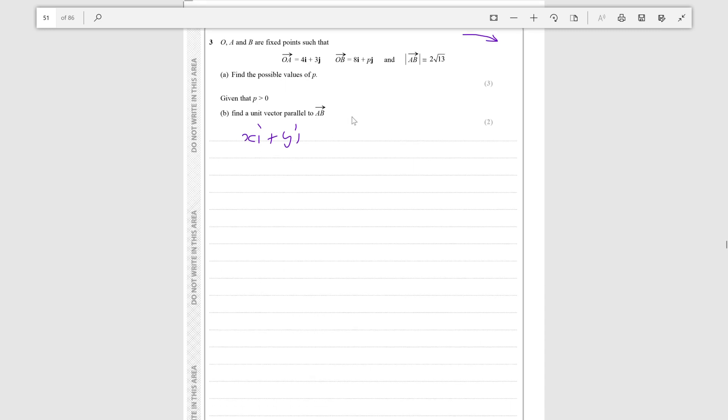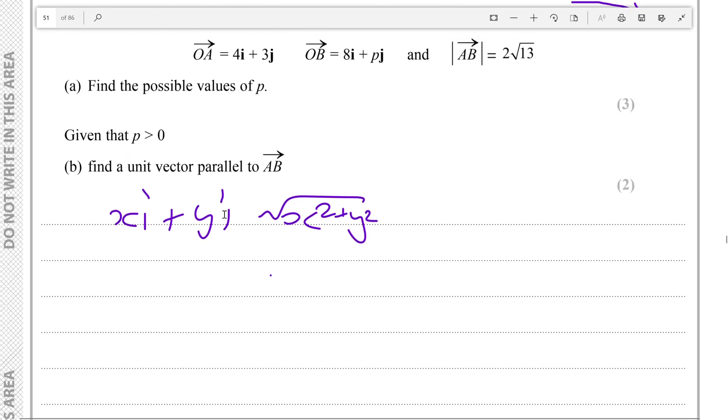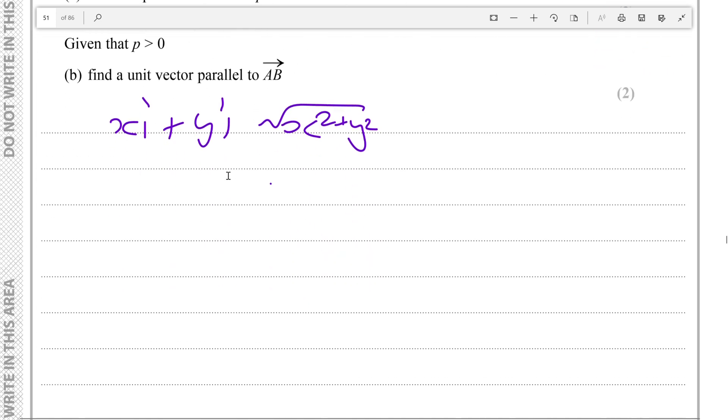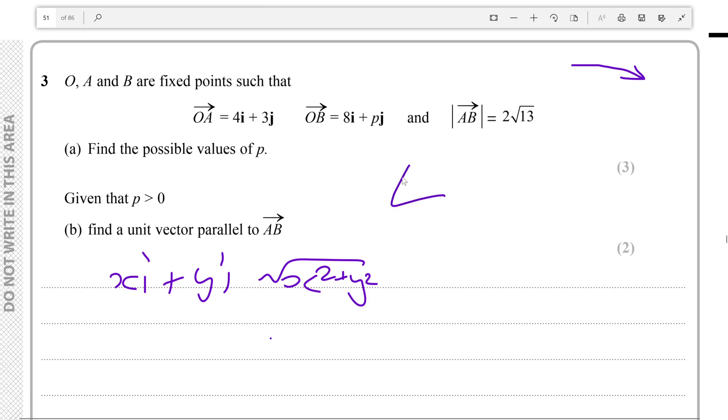That is to say, like if a vector is xi plus yj, its magnitude would just be the root of x squared plus y squared. Now let's zoom in a little bit. First let's figure out AB. If we draw a little diagram here where this is A and this is B, you see that if we want to get from A to B we have to first go from A to O so that's minus OA and then from O to B so that's plus OB.